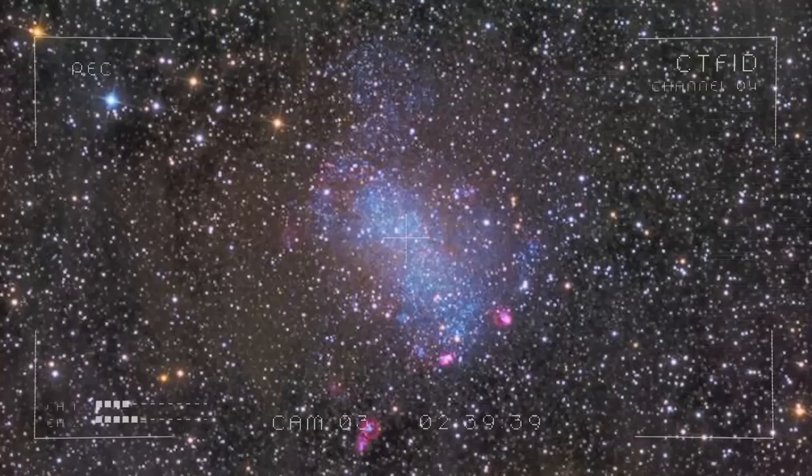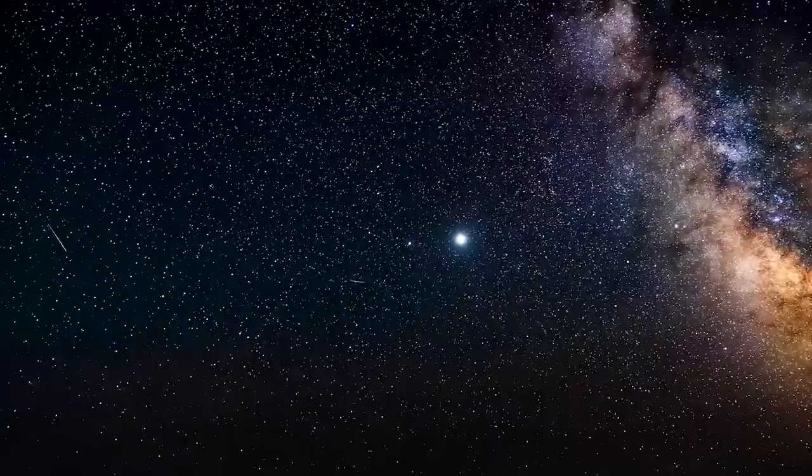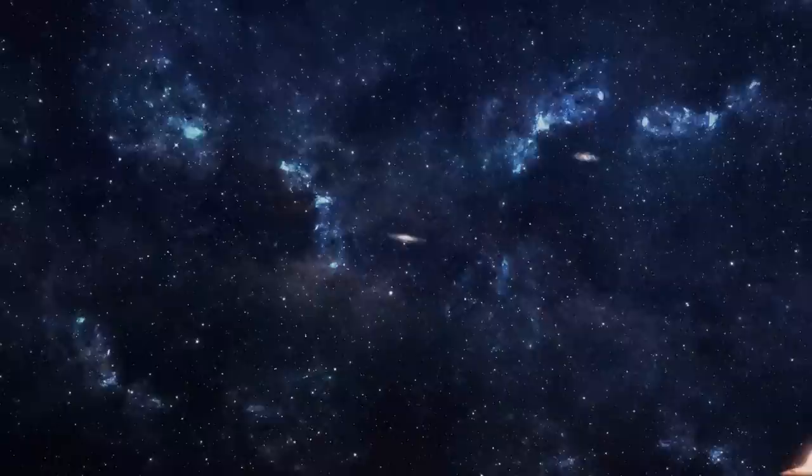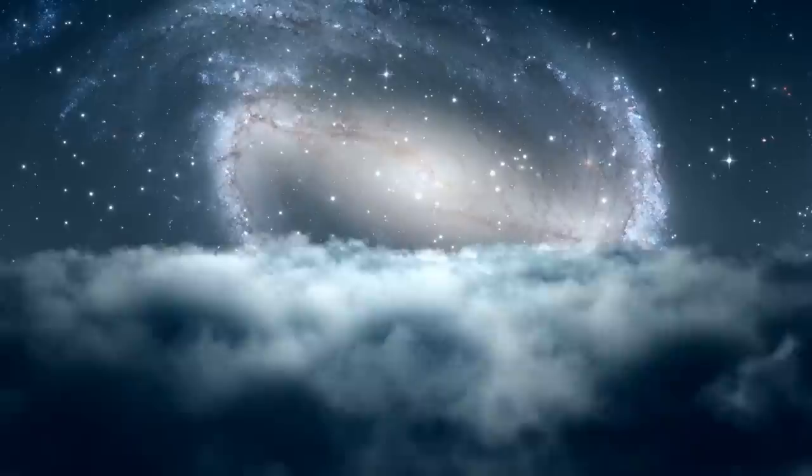Nearby, NGC 6822 is our nearest galactic neighbor that's not actually orbiting the Milky Way. Other smaller galaxies, like the Large Magellanic Cloud and the Small Magellanic Cloud, are closer, but they're satellites of the Milky Way. NGC 6822, on the other hand, is a little disorganized, but definitely independent.